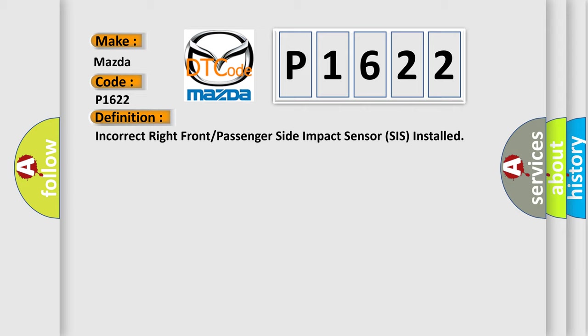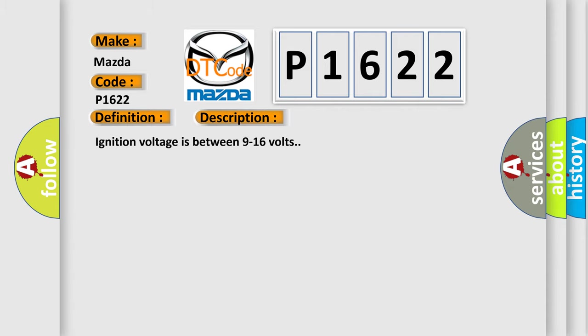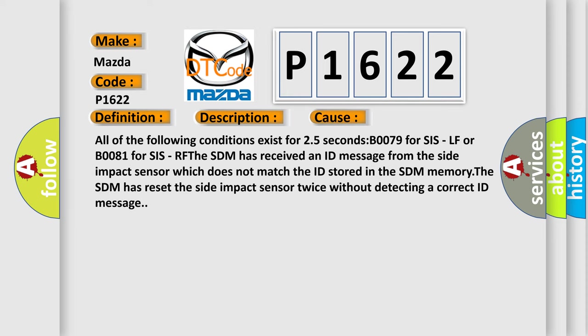Here is a short description of this DTC code. Ignition voltage is between 9 to 16 volts. This diagnostic error occurs most often when all of the following conditions exist for 25 seconds: B0079 for SIS LF or B0081 for SIS RF. The SDM has received an ID message from the side impact sensor which does not match the ID stored in the SDM memory.